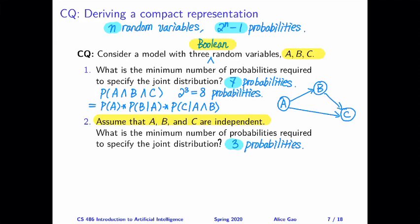Given this picture, let's think about how many numbers we need to specify all the probabilities. A does not depend on anything. To specify everything about A, we just need to know the probability when A is true and when A is false, but we only need one of them because the other is just one minus the first. So for A, we need to specify just the probability of A being true.